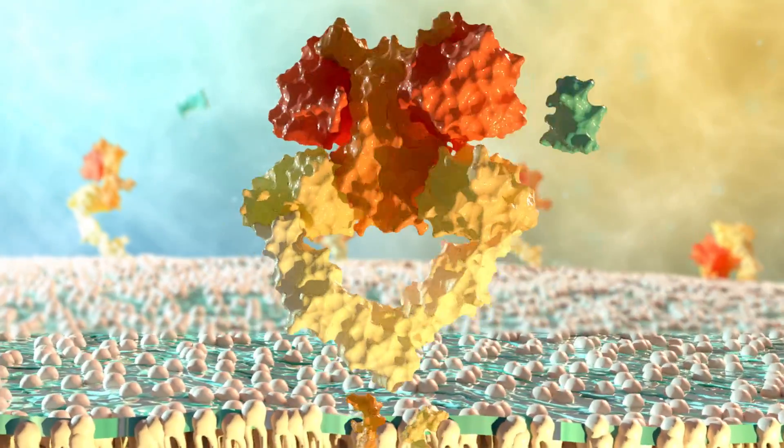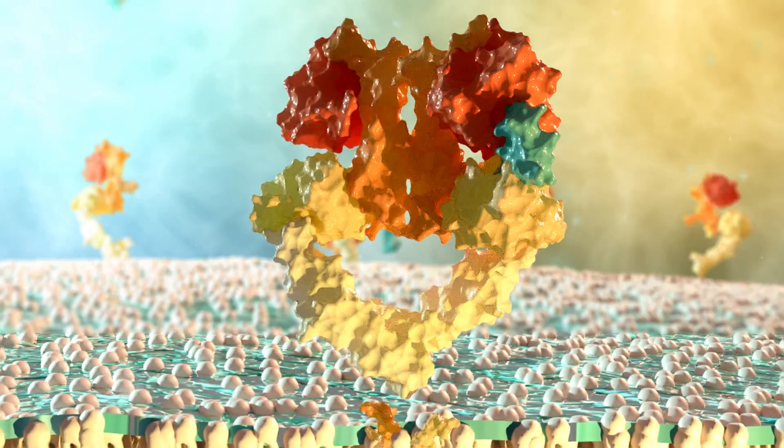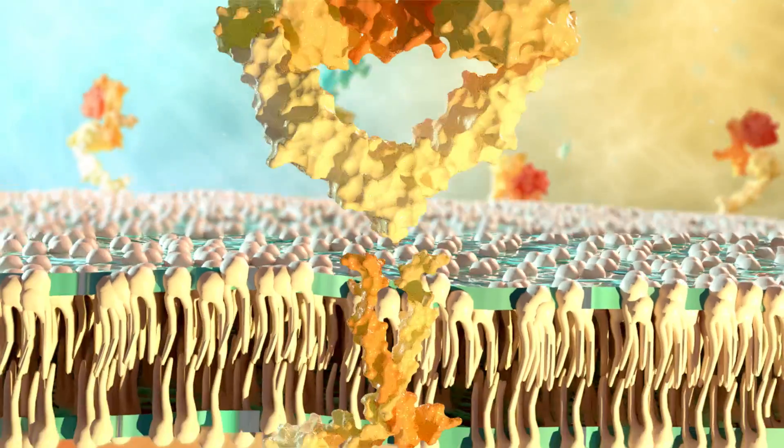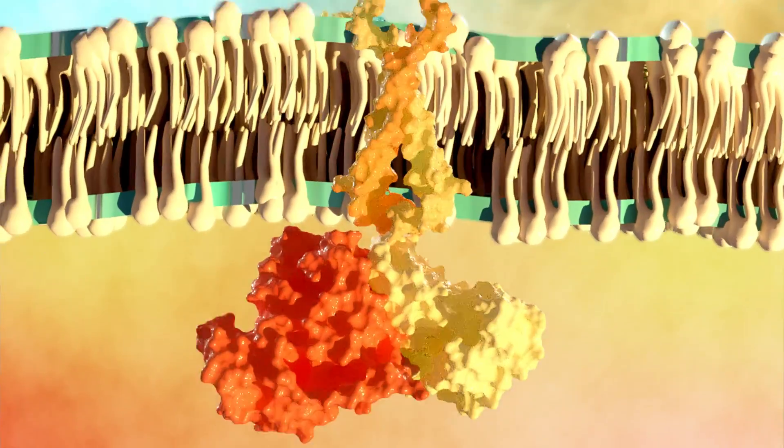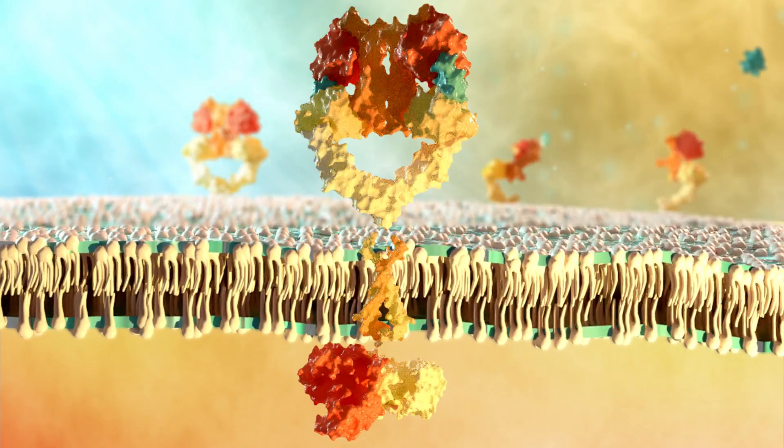When EGF binds to the EGFR dimer, it becomes stabilized, and after the second EGF binds, further changes within the transmembrane and intracellular domains propagate signals for growth into the cell.